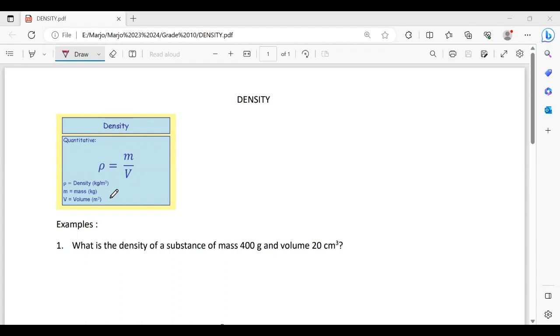Now we will discuss several questions. Number one: What is the density of a substance of mass 400 grams and volume 20 centimeters cube? We can apply the formula m = 400 grams and volume = 20 centimeters cube.